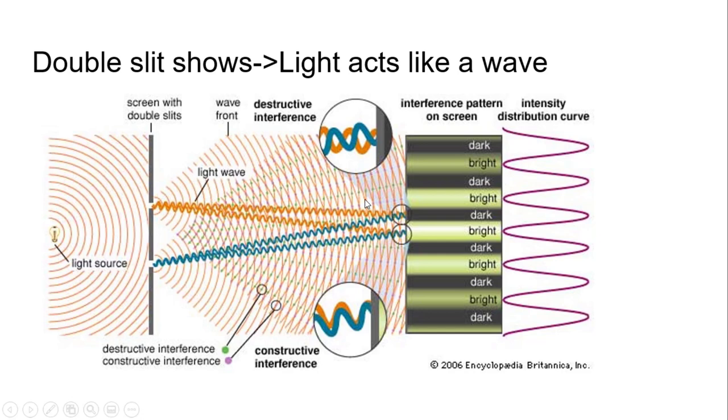If the wave—say the top one is orange, the bottom one is blue—if they're out of sync with each other, completely out of sync, then you would see dark. That's destructive interference.